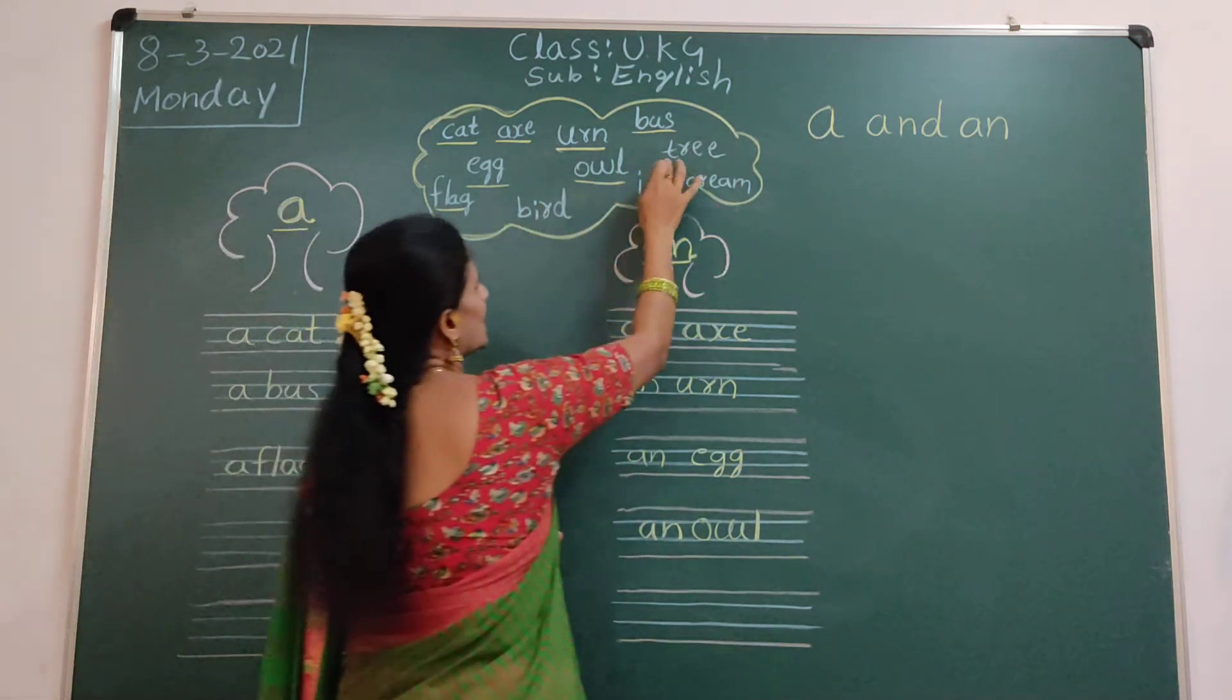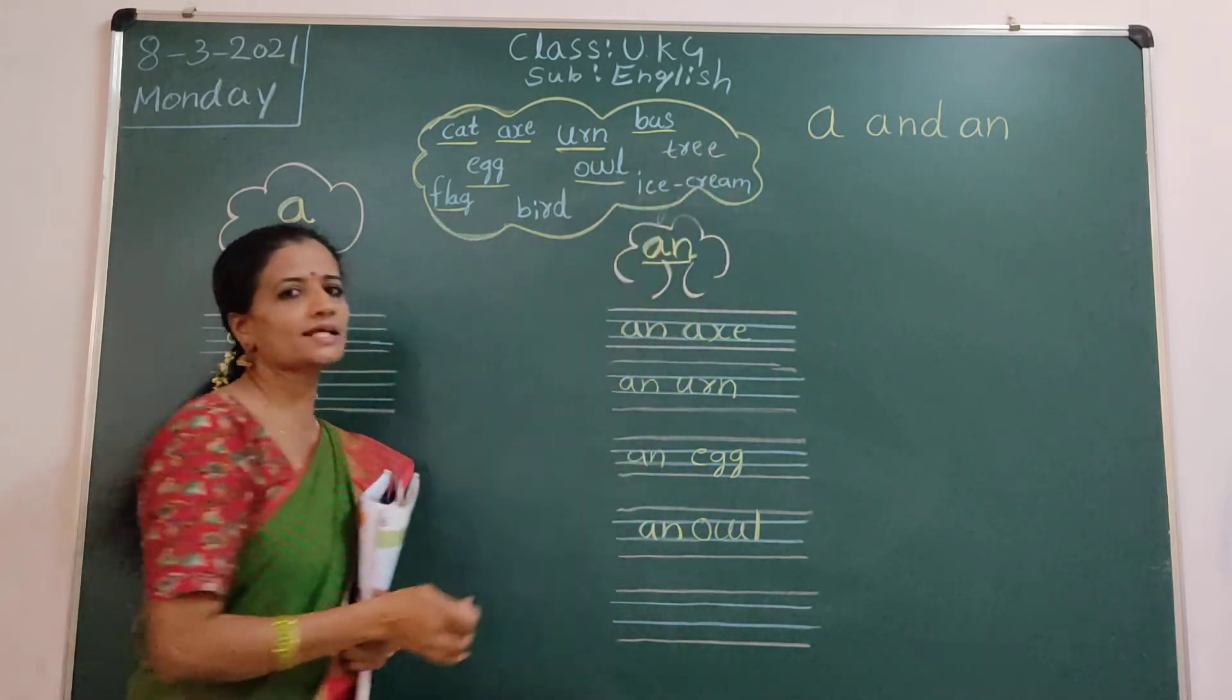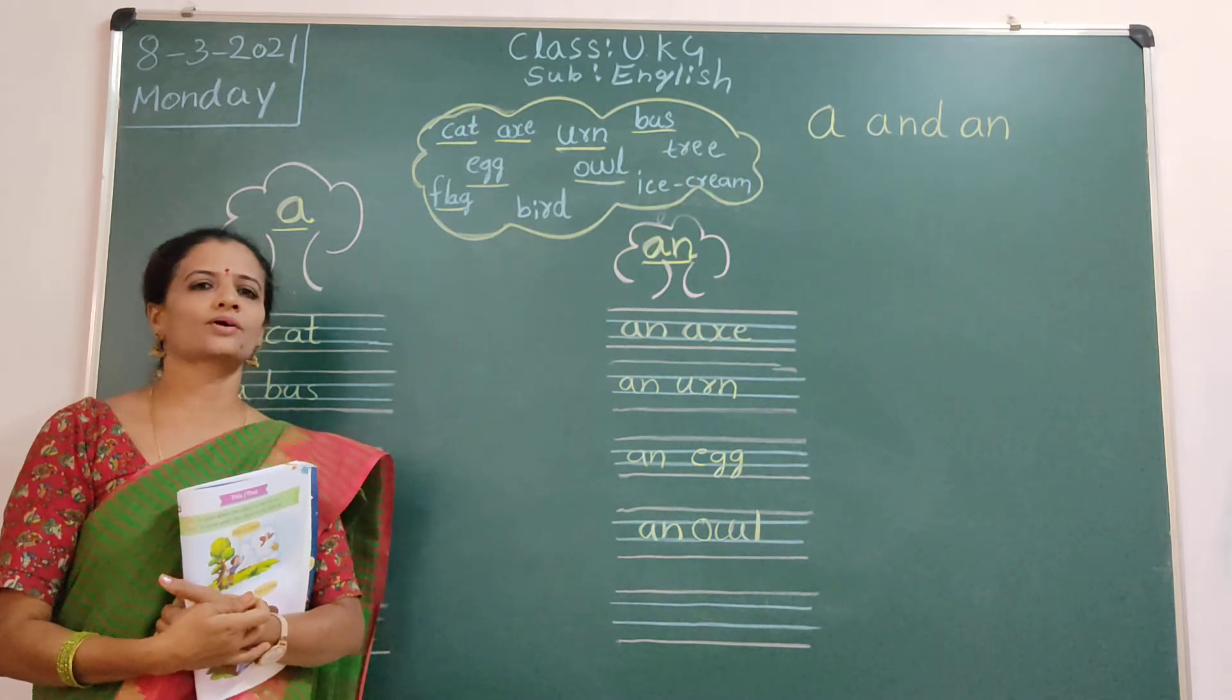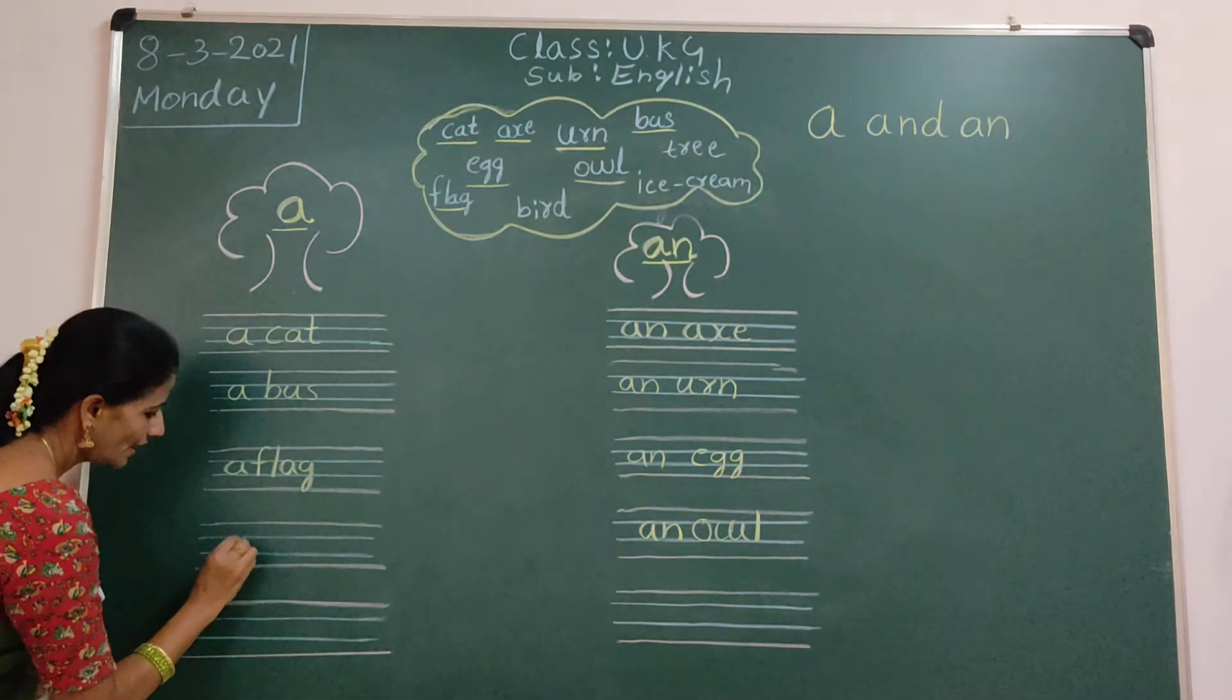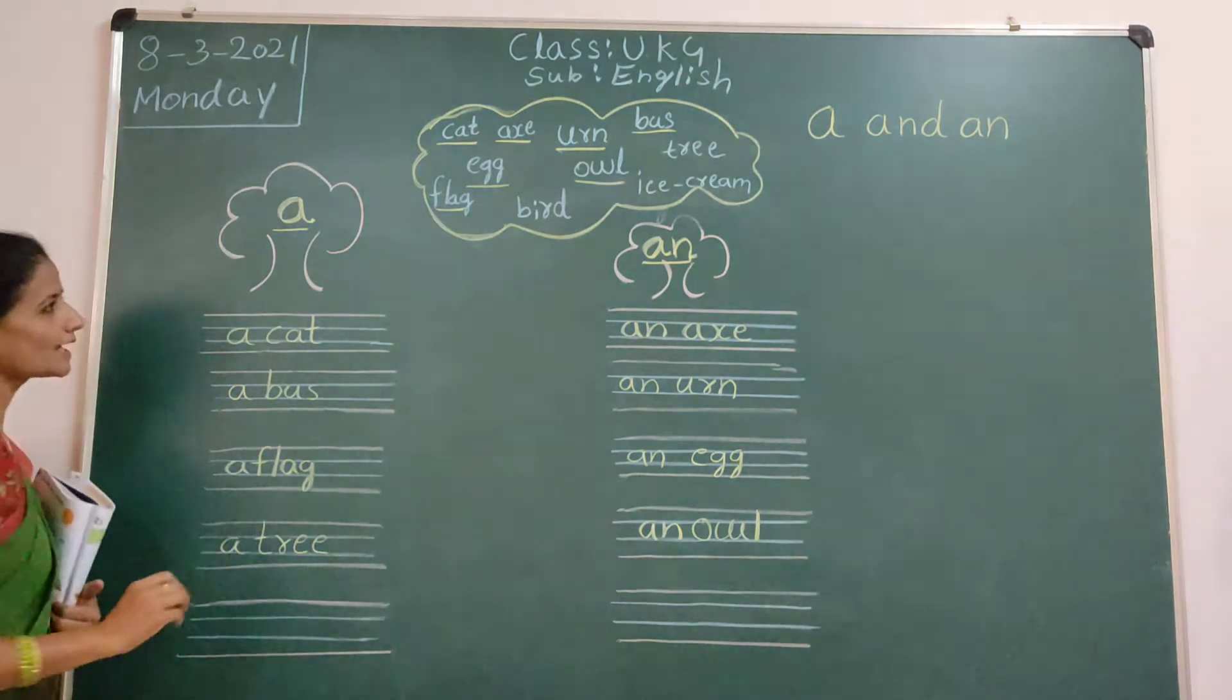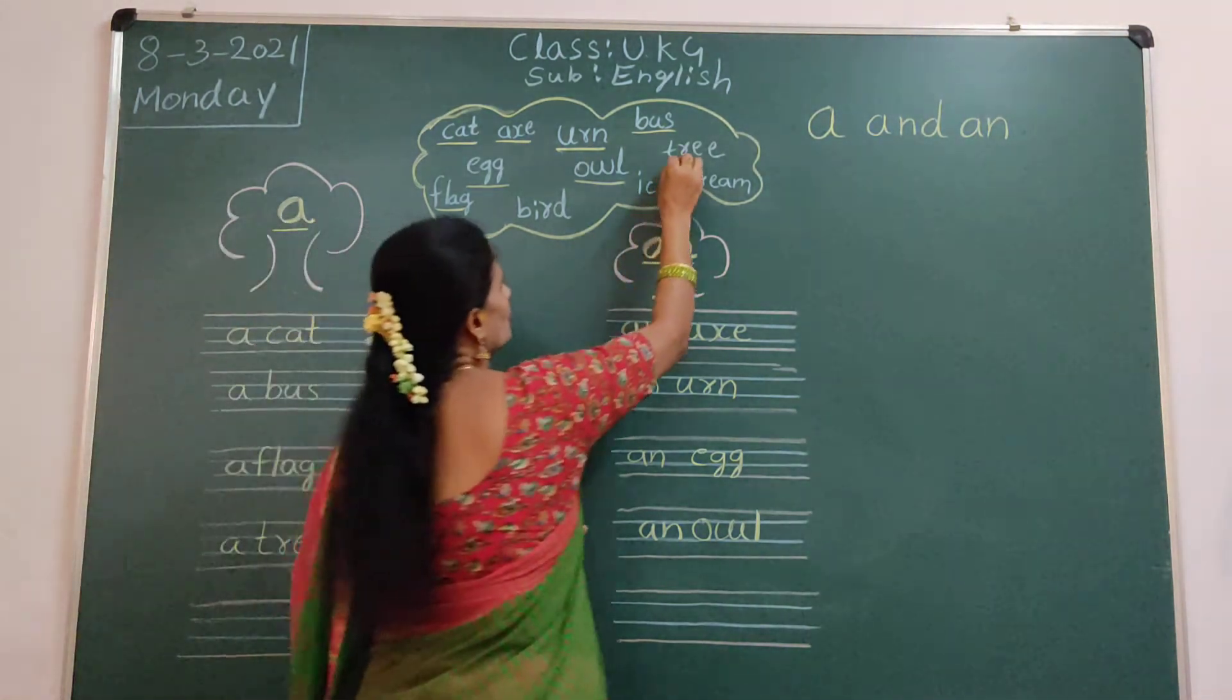So, next. T-R-E-E. T is a consonant. Not vowel. Okay. We will use A. A. Tree. Okay. Tree. So, tree also finished.